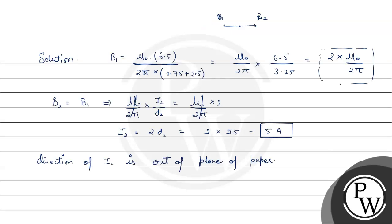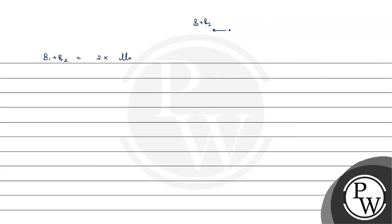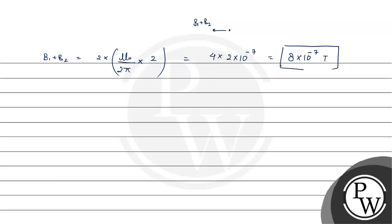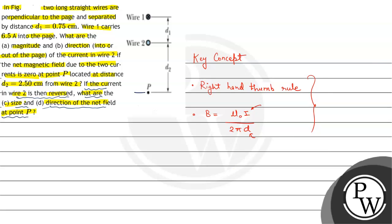So the net magnetic field will be B1 plus B2, which equals 2 times mu-naught upon 2 pi times 2. This comes out to be 2 times 4 times 10 to the power minus 7, which equals 8 times 10 to the power minus 7 tesla. So the magnitude of the net magnetic field at P after the current in wire 2 is reversed is 8 times 10 to the power minus 7 tesla, and its direction is towards the left.